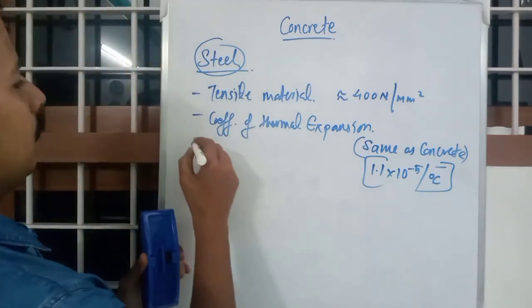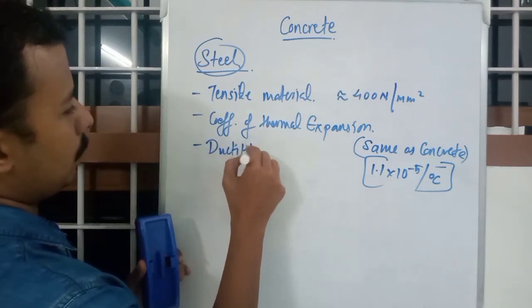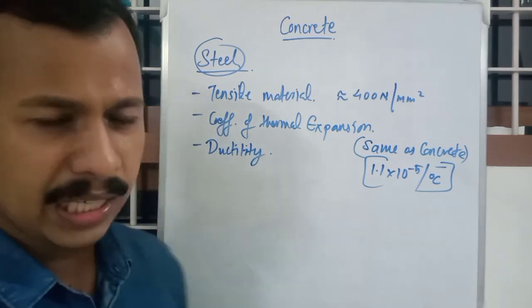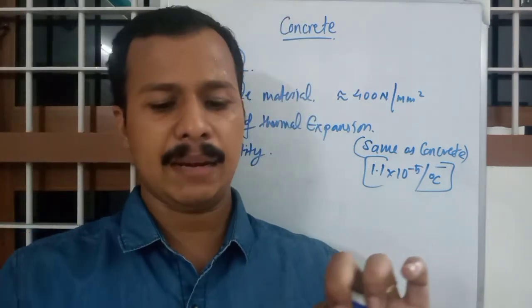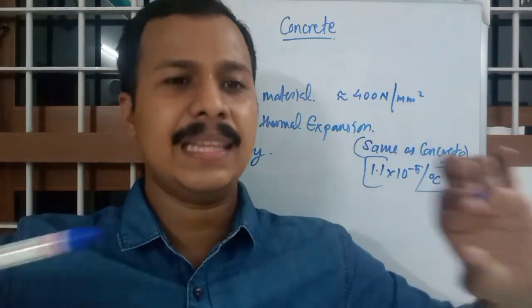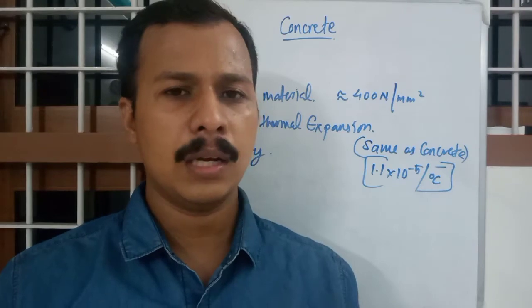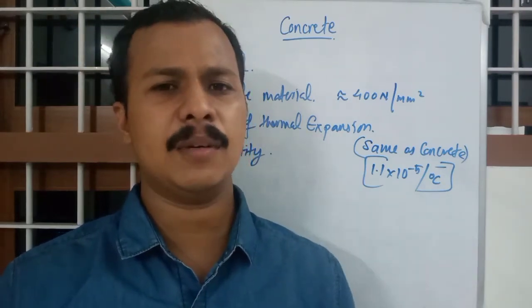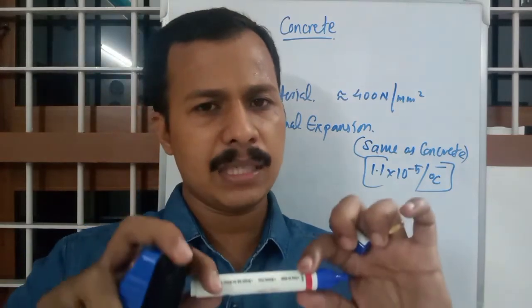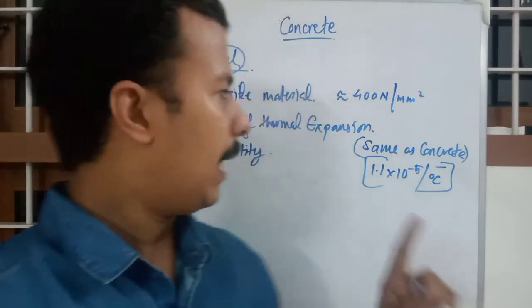And the more minor things: ductility. What is ductility? Ductility is the property by which any metal can be made into a thin wire. Gold is a very ductile metal. That is why we use gold for making ornaments - you can elongate as much as we want. So ductility is the property by which it can be made into a thin wire. And ductility is very high for steel.